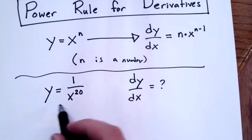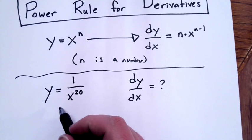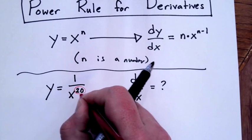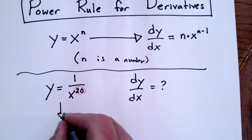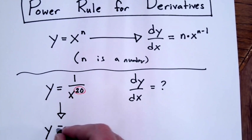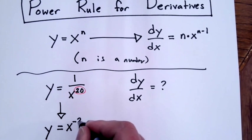At first glance, this doesn't look like a power function at all. Power is in the denominator of this expression. We can rewrite this algebraically as y equals x to the negative 20.